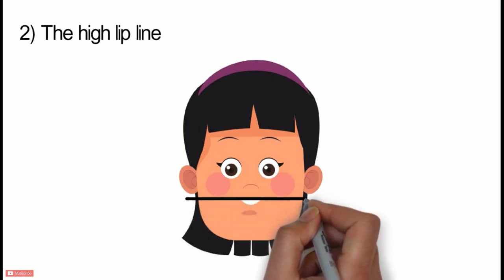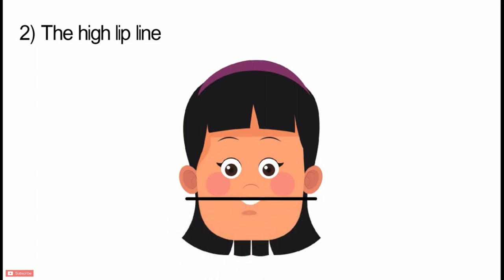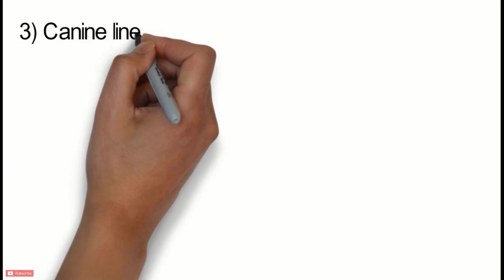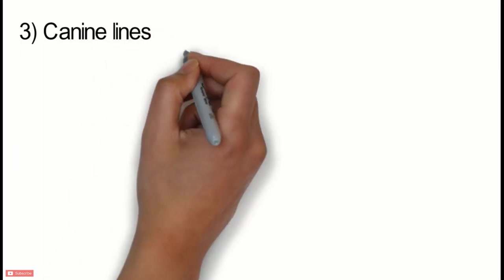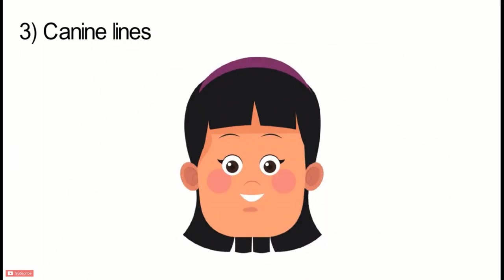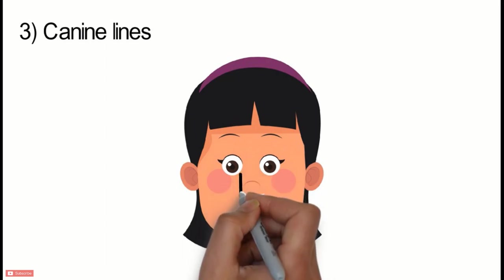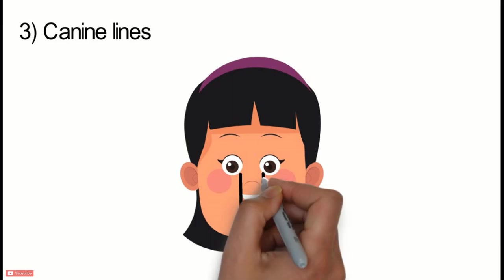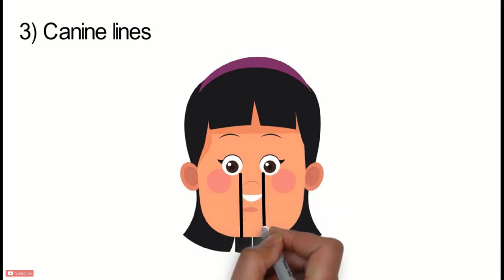The high lip line helps assist the determination of the length of teeth needed. Next are the canine lines. These mark the corners of the mouth when the lips are relaxed and are supposed to coincide with the tips of the canine teeth. These lines give some indication of the width of the anterior six teeth.